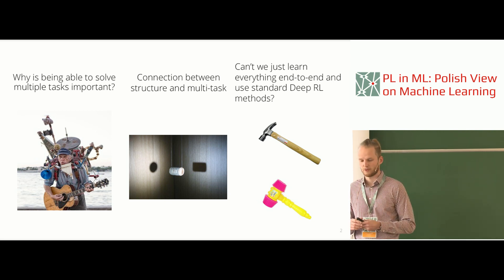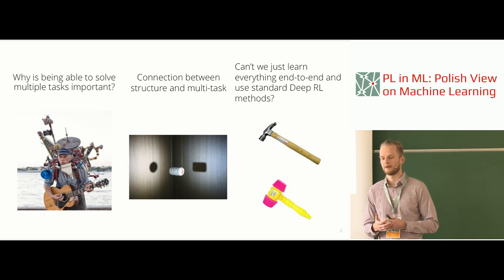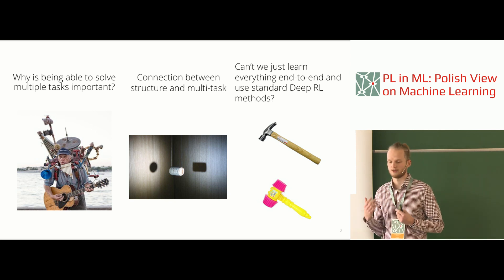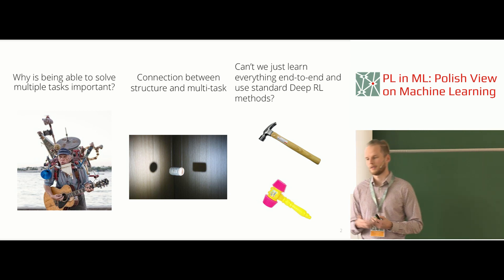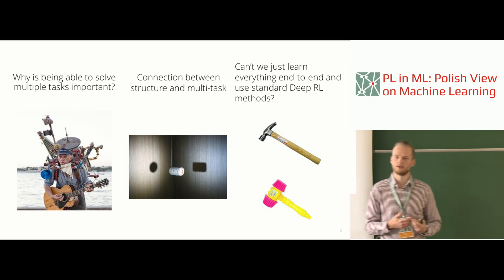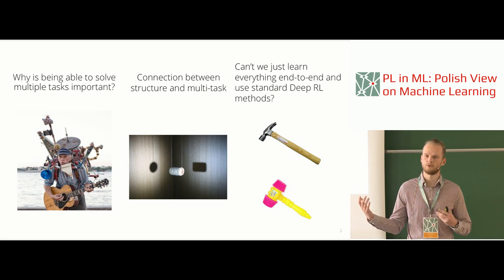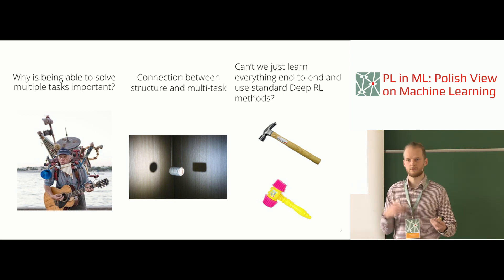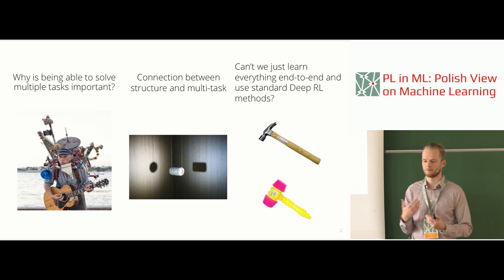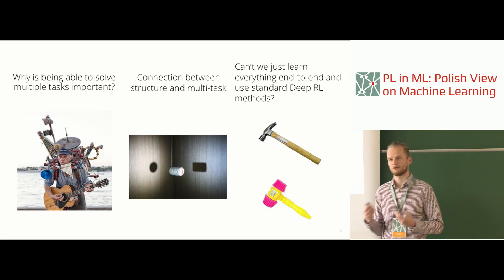If we want to look at and learn the right structure, it's much easier when we work on multiple tasks. For example, if I try to answer the question of where perception and policy start, it's very hard to make this distinction when looking at only one particular task. However, with a multi-view perspective across multiple tasks, it's much easier to discover the latent structure and use it to our advantage.